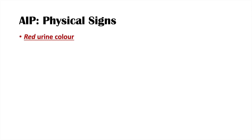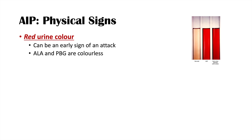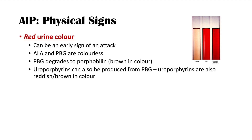Some physical signs of AIP include red urine color. Normal urine color is compared to a red urine color that looks like red wine diluted with water - almost a red wine type color. This can be an early sign of an attack. ALA and PBG are actually colorless, so the red color comes from PBG degrading to porphobilin, which has a brownish color, and uroporphyrins, which can also be produced from PBG and are reddish to brown in color.